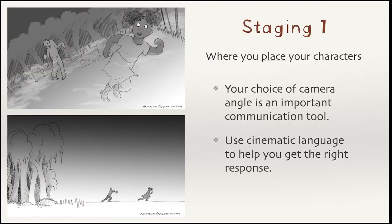One of the things that helps us understand those relationships is using cinematic language — using different types of shots like closeups, medium shots, wide angles, extreme closeups, Dutch angle, up shots, and down shots. Your choice of camera angle really helps communicate with the audience, because we've been watching films and TV all of our lives and are sort of fluent in that cinematic language. We can make assumptions based just on the type of camera angle we see.